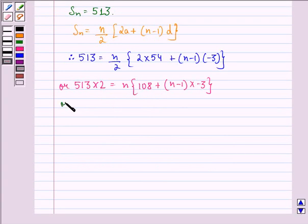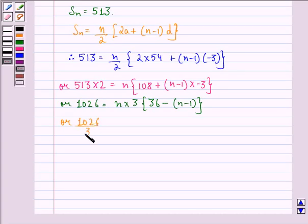Or 1026 divided by 3 equals N into 3 into 36 minus N minus 1, or 1026 divided by 3 divided by 3 equals N into 36 minus N minus 1.